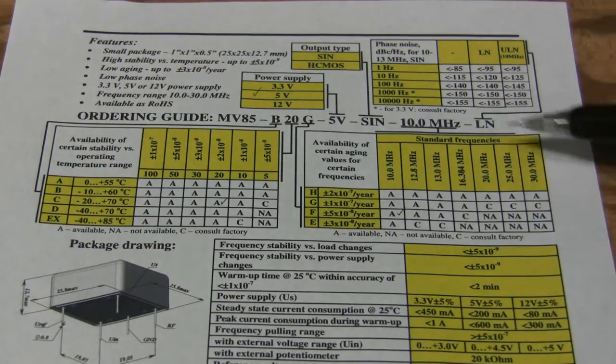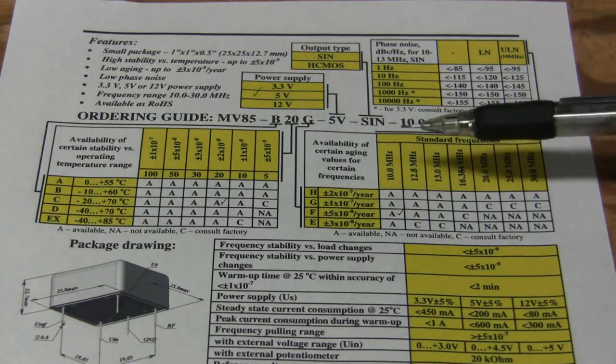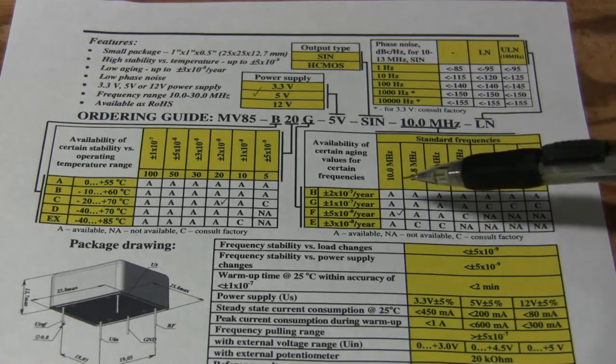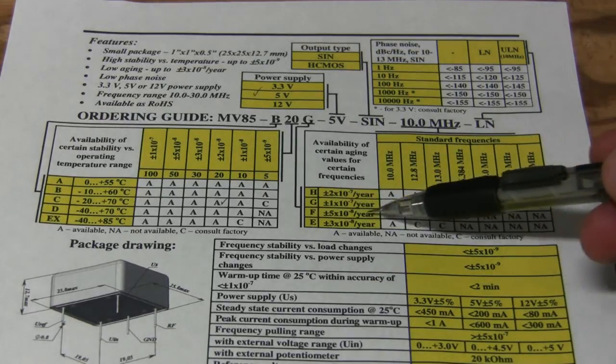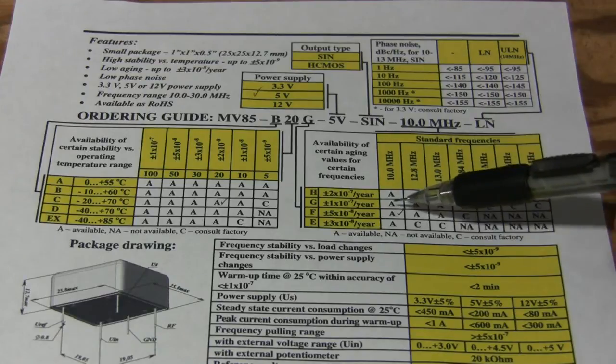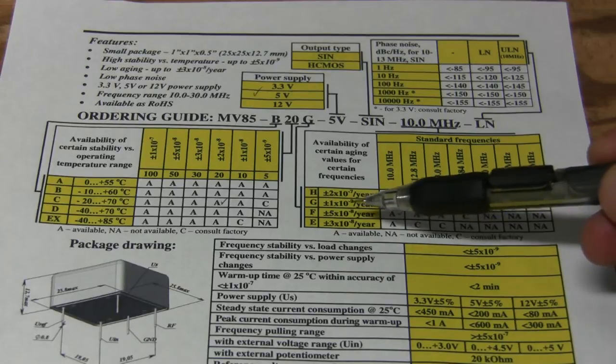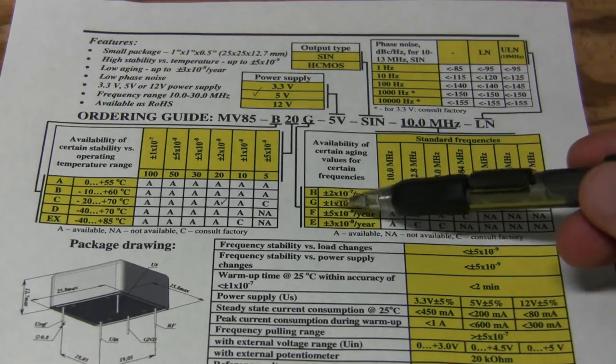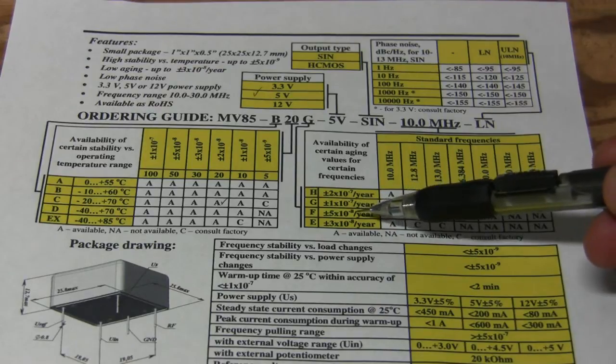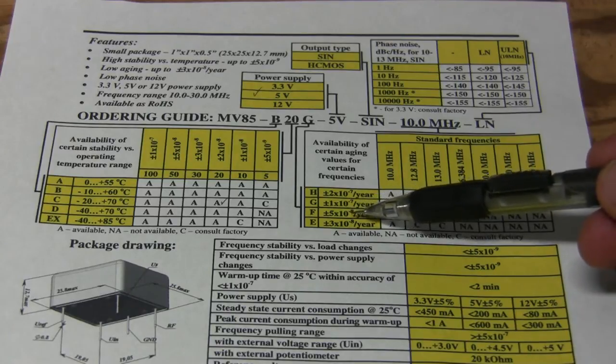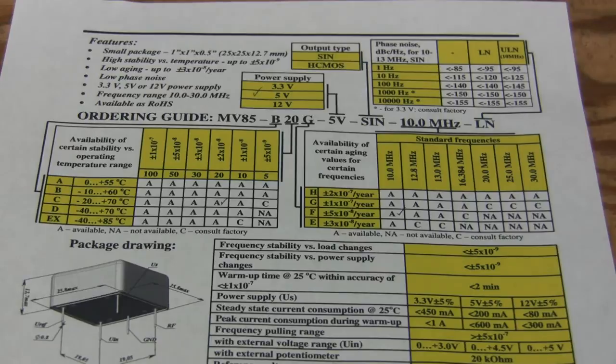This table is about aging. And my model is this one, 10 megahertz. And aging is rated at 5 times 10 to the minus 8, which is 50 parts per billion per year. In ppm's that would be 0.05. That's quite impressive.